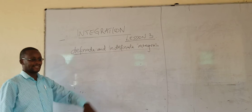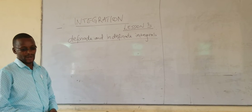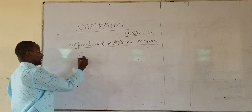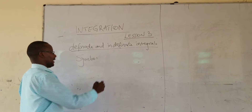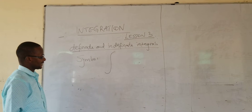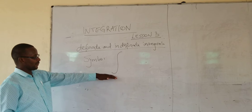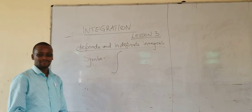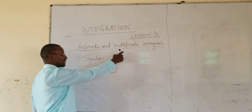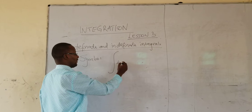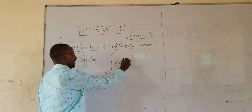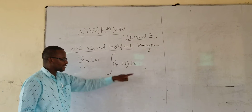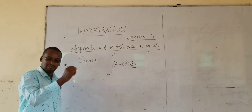Now, when we were integrating — that is, getting the value of Y — there is a symbol that we normally use for integration, and this is the prolonged S. So, this is the symbol we use. When you find such a symbol in mathematics, it means integrate. So, if I write that symbol and I put 4 minus 6X, then I put this in brackets, DX — I mean integrate with respect to X. This DX means with respect to X.